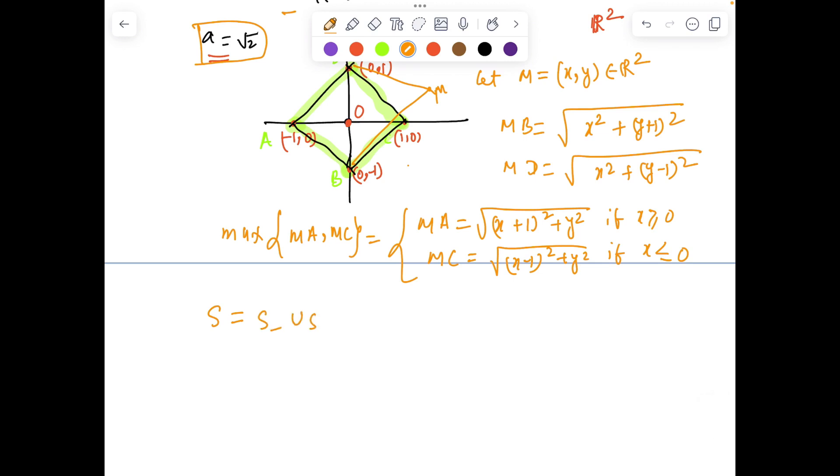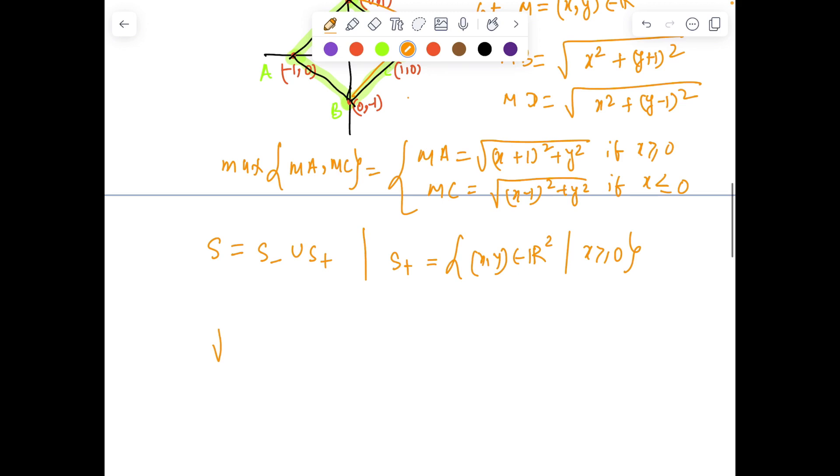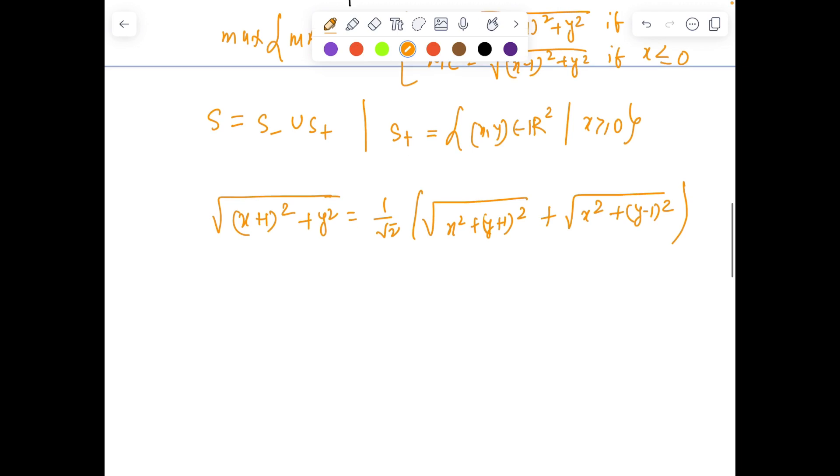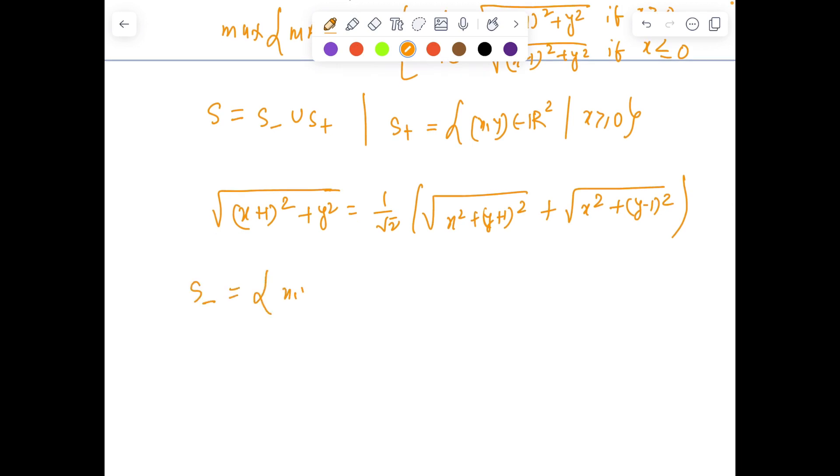Now it follows that our set S is the union of S⁻ union S⁺, where S⁺ is the set of points in R² such that S⁺ is all those points (x, y) in R² so that x ≥ 0. According to our given constructions of the problem, √((x+1)² + y²) equals √2 times √(x² + (y+1)² + x² + (y-1)²).